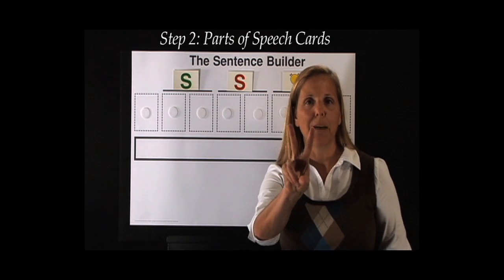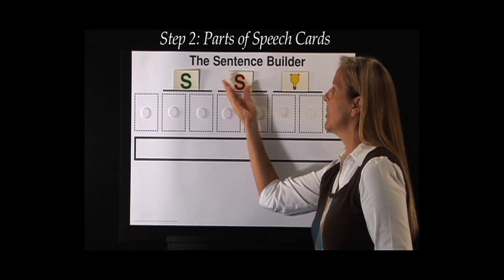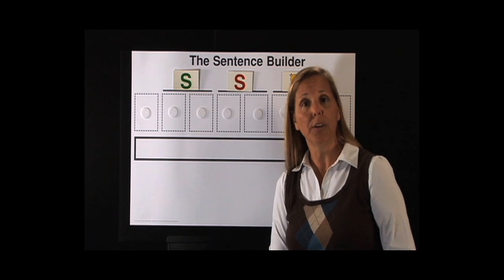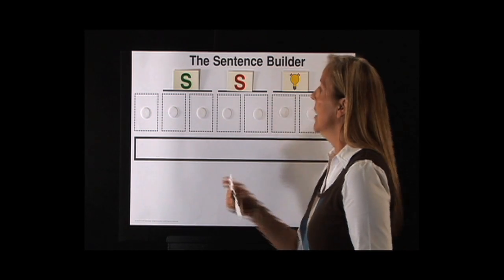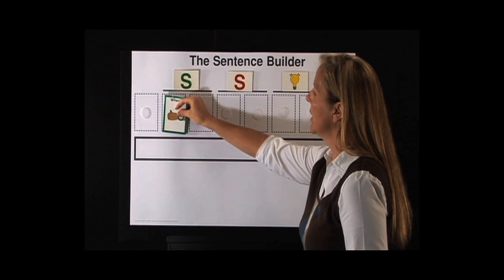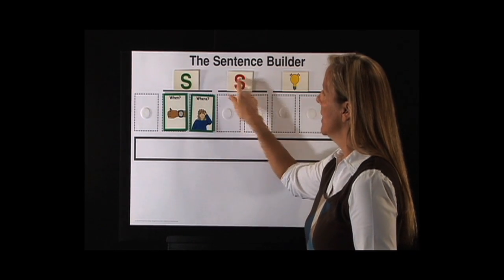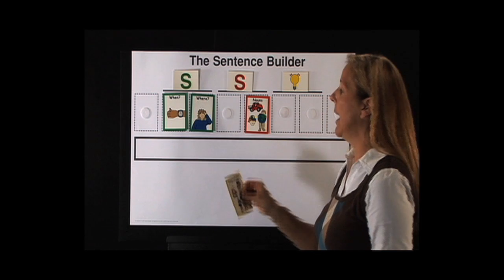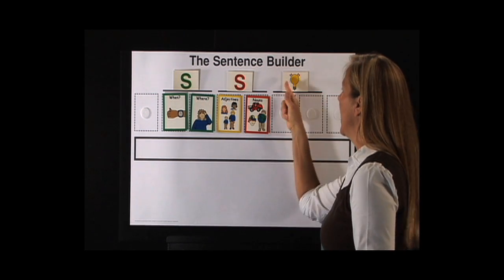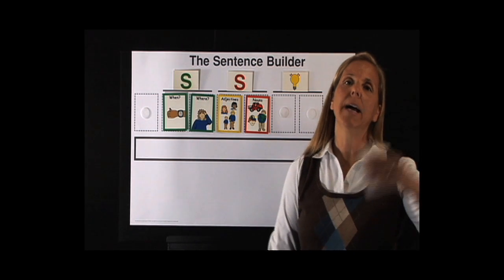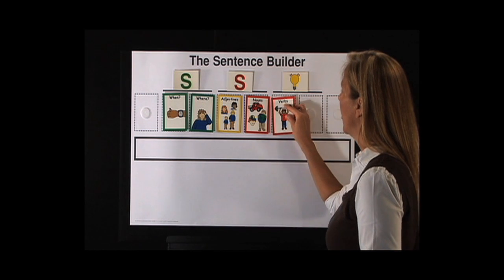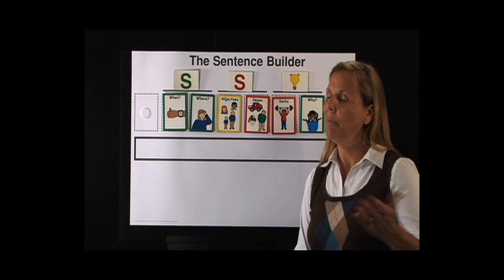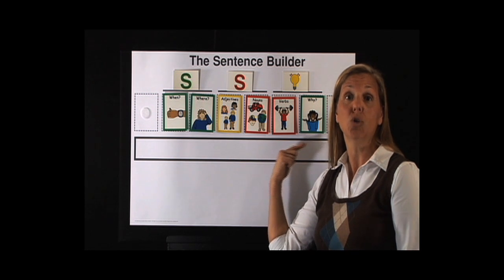Step two: parts of speech card. We're now going to break our secret formula up into smaller parts so students can brainstorm all the different parts of the sentence. Setting tells us when and where, so we add a when and where card. Subject — who or what the information is about — is a noun, so we add our noun card, plus an adjective card to describe our noun. For the big idea, we add a verb to kick it off and a why phrase to explain why the information is so important.